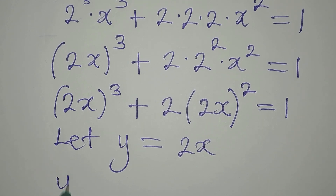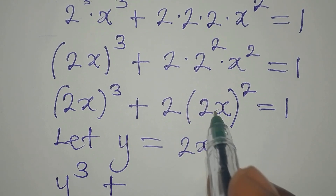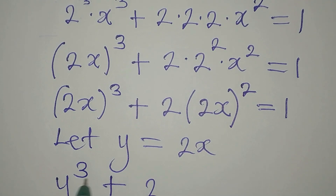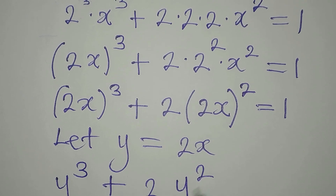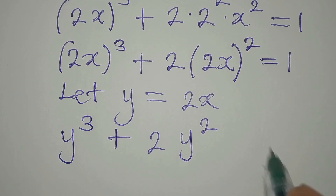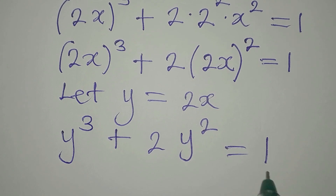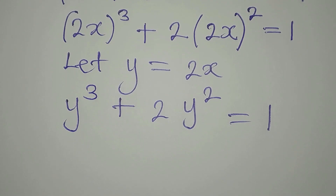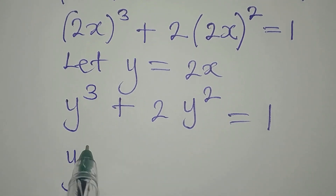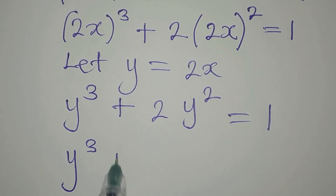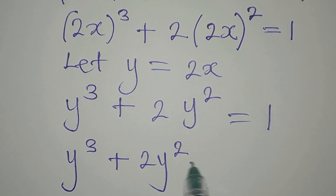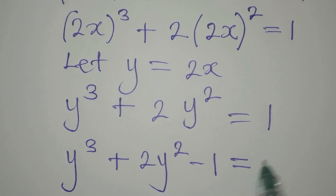So here we are going to have y to the power of 3, plus we are going to have 2y to the power of 2 equals 1. Let's bring this to the left, so that if we do that, we are going to have y to the power of 3 plus 2y squared minus 1 equals 0.